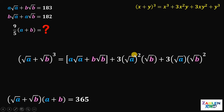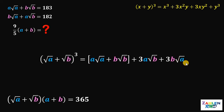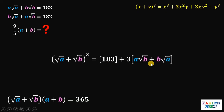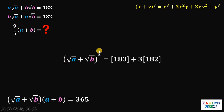Now, square root of A quantity squared is just A, so the middle term becomes 3A times square root of B. Also, square root of B quantity squared is just B, so the last middle term becomes 3 times B times square root of A. We can factor out 3 from these two terms, giving 3 times (A times square root of B plus B times square root of A). Notice that from our given equation, A times square root of B plus B times square root of A equals 182. So we have (square root of A plus square root of B)³ equals 183 plus 3 times 182.